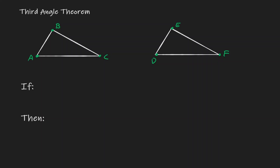What does the third angle theorem say? Well, let's say that we know that angle A is congruent to angle D, and also we know that angle B is congruent to angle E.